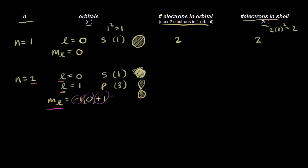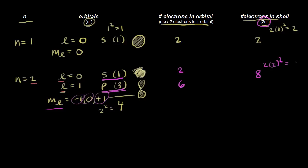So we have one s orbital and three p orbitals, giving us four total orbitals — which we can verify with n squared: two squared equals four. For electrons: the s orbital holds a maximum of two electrons, and the three p orbitals hold three times two equals six electrons. So the total is eight electrons in the second energy level, confirmed by two n squared: two squared times two equals eight.